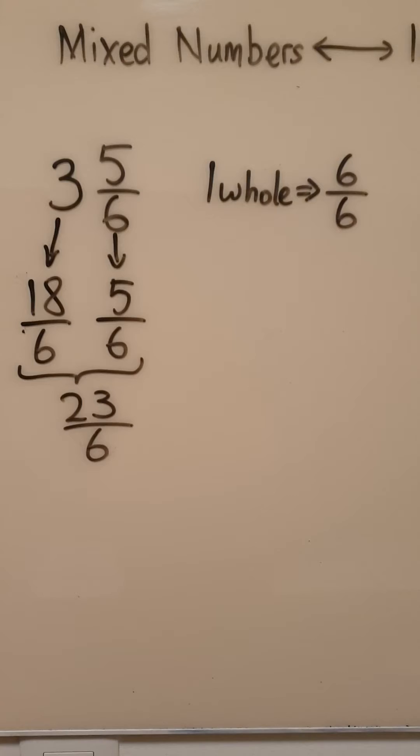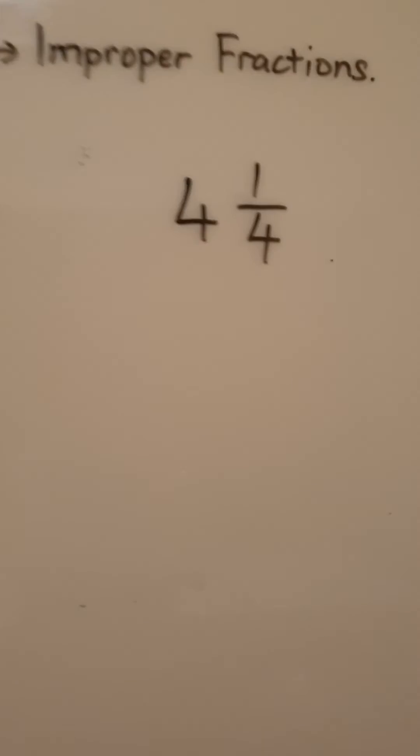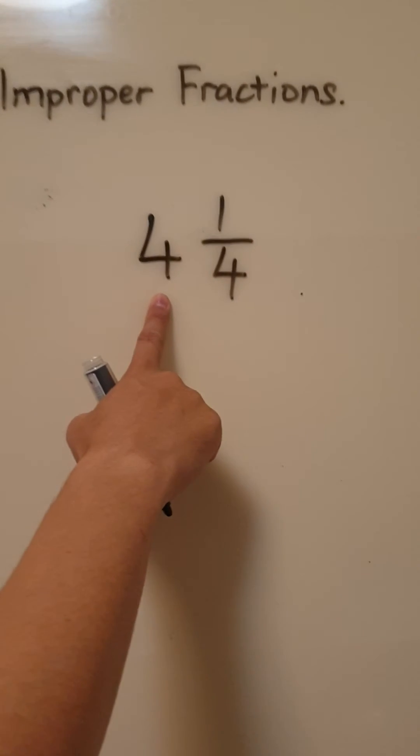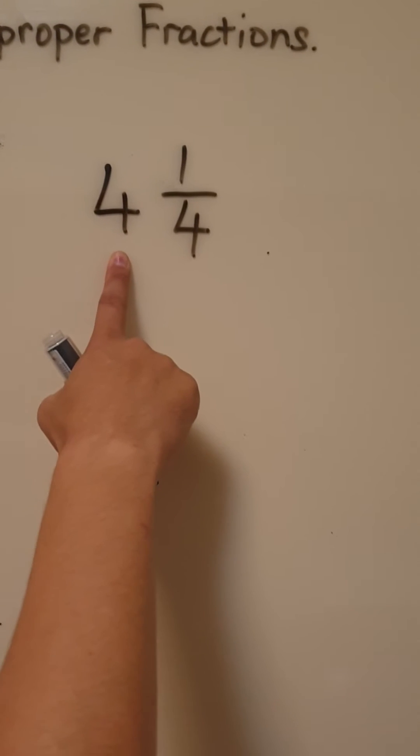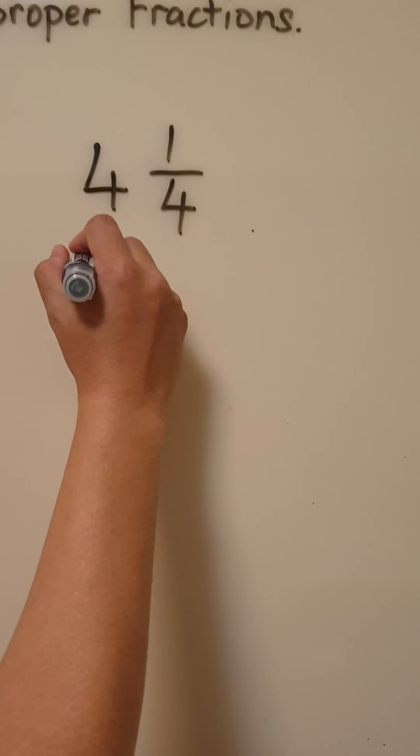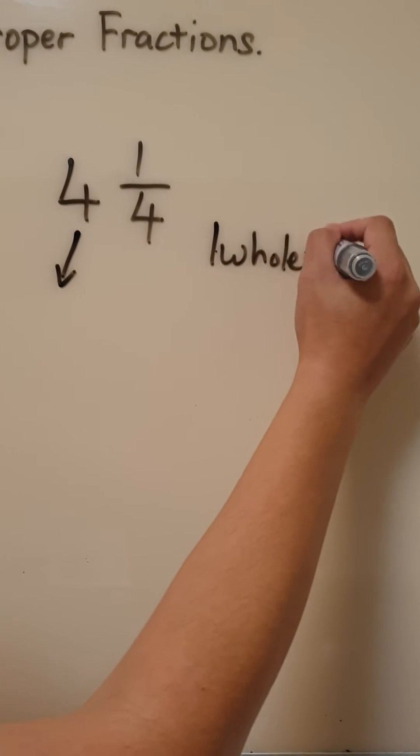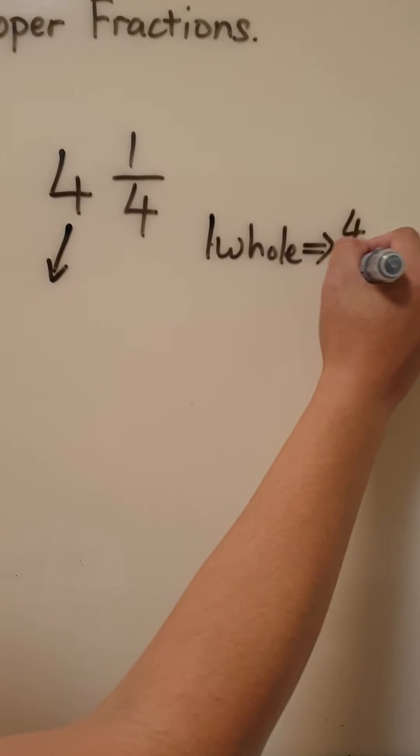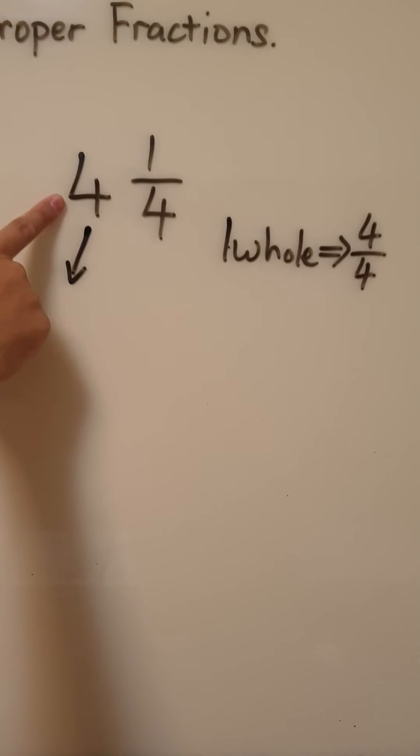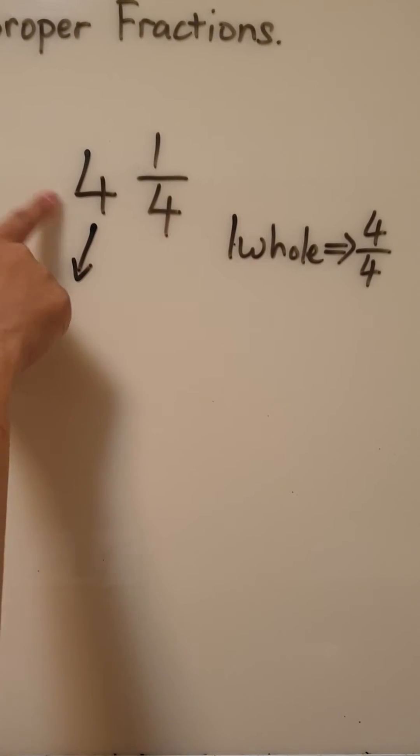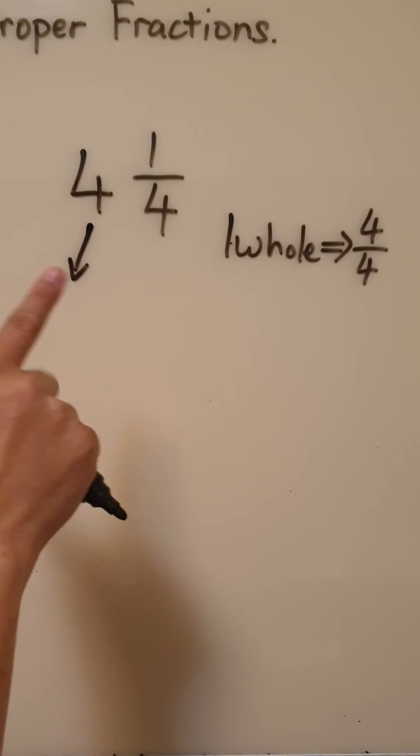Now let's take a look at the next example. Here we have four wholes. So one whole, I already know, is made out of four parts. Four out of four. So as we have four wholes here, let's check using our four times table. Four, eight, twelve, sixteen. I'm fast.